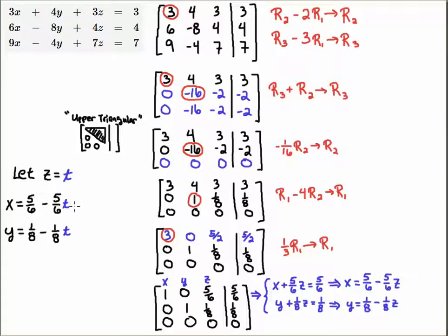And likewise Y is going to equal 1/8 minus 1/8*t. Now once I have that, I'm going to do something funny to Z here. I'm going to say Z is equal to 0 plus 1*t. The reason I'm going to do that is because I'm going to break up my solution now into vectors.